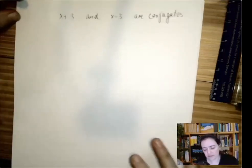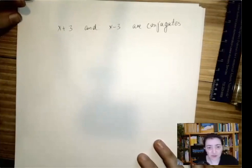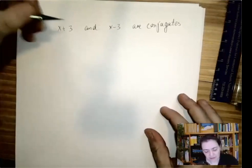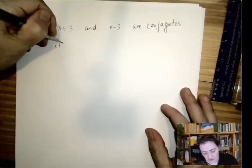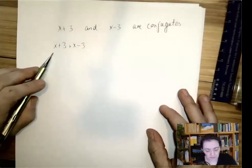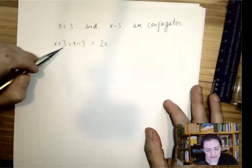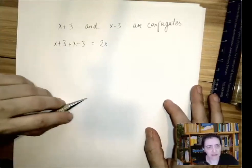Conjugates are very useful because there is cancellation when we add, subtract, or multiply them. When we add two conjugates, such as x plus 3 plus x minus 3, the piece that has the same term is going to double up, and the terms that have alternating signs will cancel out each other.